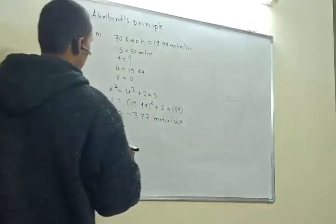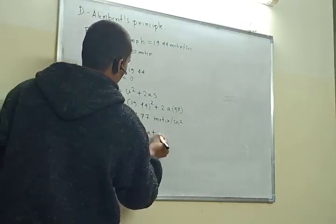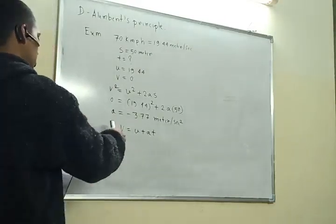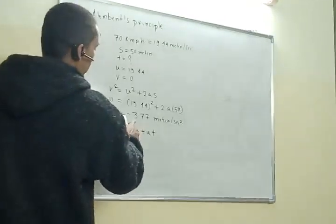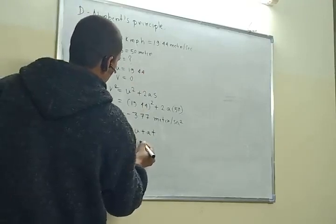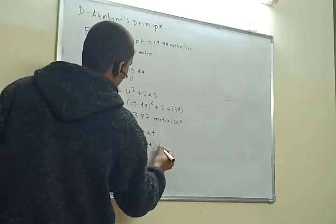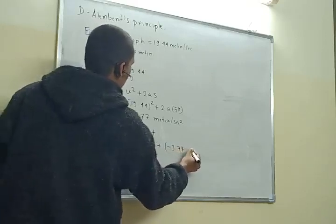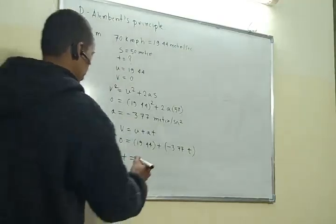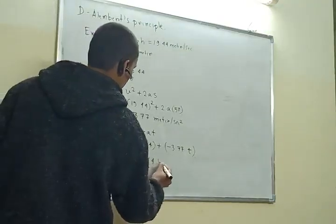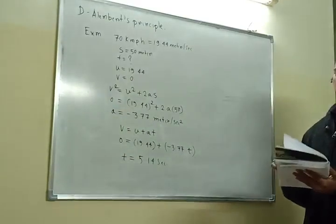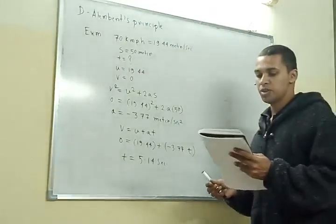Now I can find the time. Using V = U + AT: V = 0, U = 19.44 m/s, A = −3.77 m/s². So 0 = 19.44 + (−3.77) × T. I get T = 5.14 seconds. So after 5.14 seconds, the bike will come to a stop.